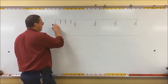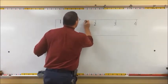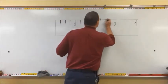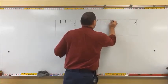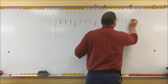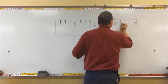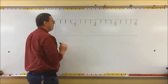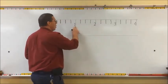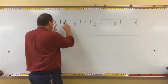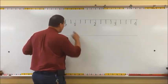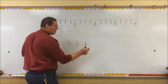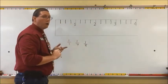And the same thing between two and three - broken up into four pieces. And the same thing from three to four - broken up into four pieces. Now notice the inch lines are longer than the fourth lines, because the whole numbers are a larger fraction - that's one out of one, whereas these are one out of four. So the next ones we're going to do are one out of eight. The larger the denominator gets, the smaller the piece. And the smaller the piece, the shorter the line on the ruler.